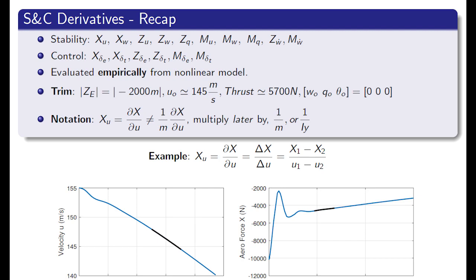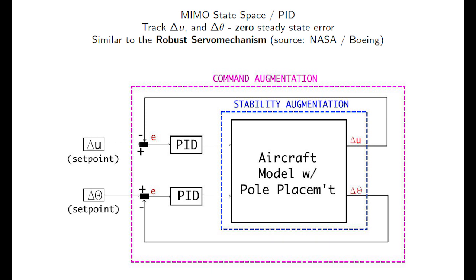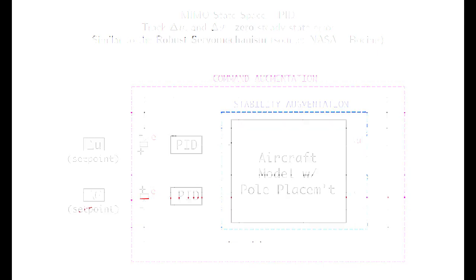For our controller, for the linearized model, we proposed a robust servomechanism. This has been done many times at NASA and at Boeing. It's simply tracking a setpoint with zero error, and you can see that it is two loops — the inner loop is the stability augmentation and the outer loop is the command augmentation.